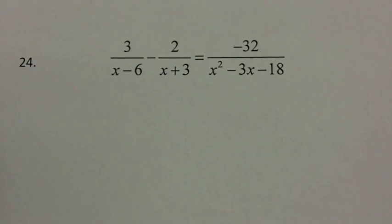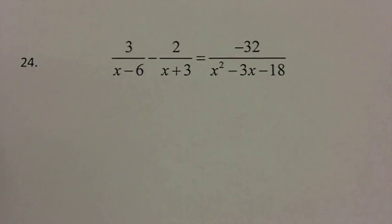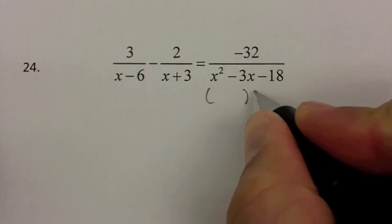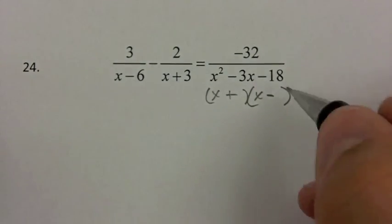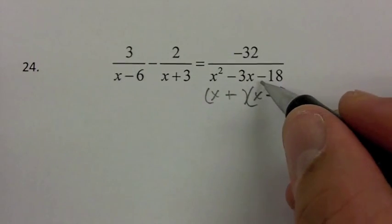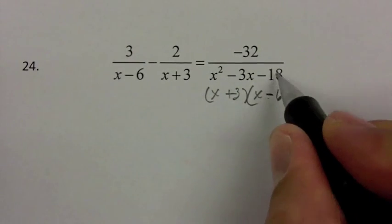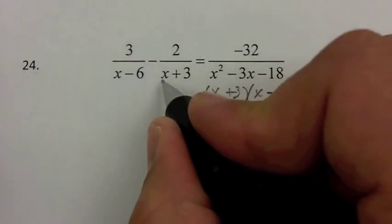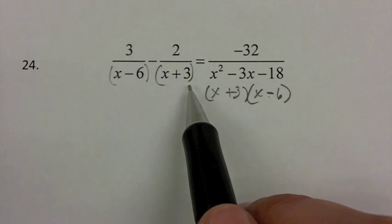Taking a look at question 24, we're asked to solve this equation. We've got fractions, so we want to clear them by multiplying everything by the LCD. First I need to factor the trinomial to see what factors are involved — x and x, last term is negative so plus and minus, multiplying to give me 18 with a difference of 3, that's 6 and 3 — giving x minus 6 times x plus 3. So my LCD is x minus 6 times x plus 3.